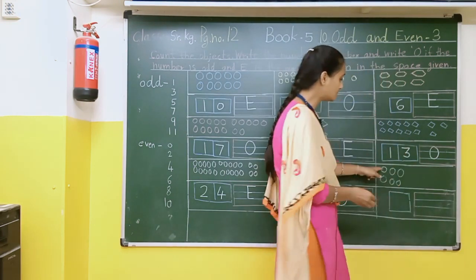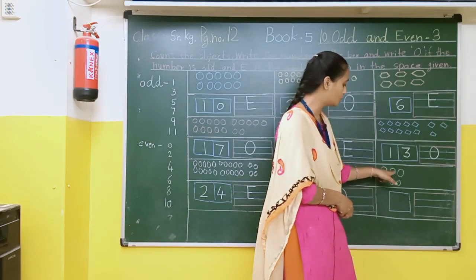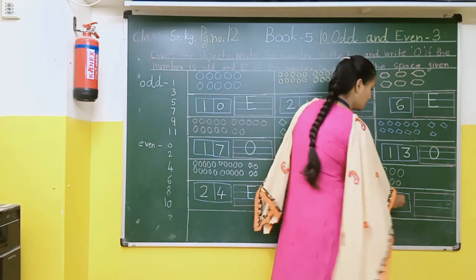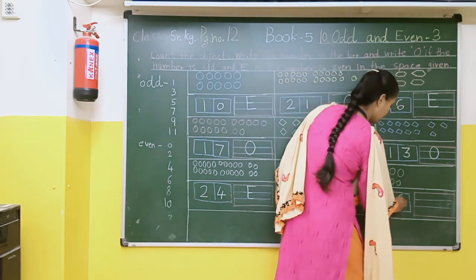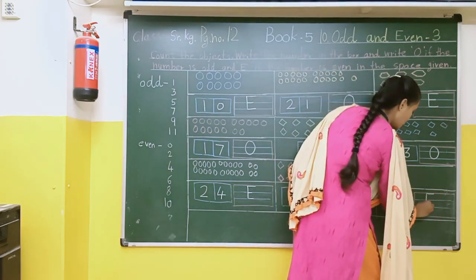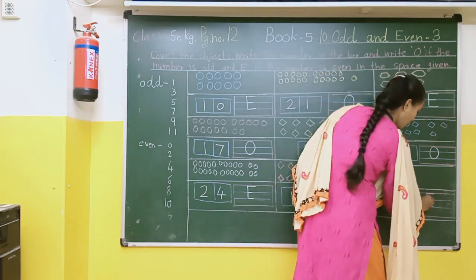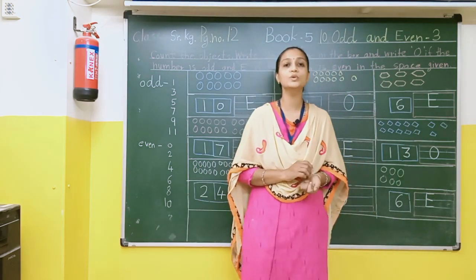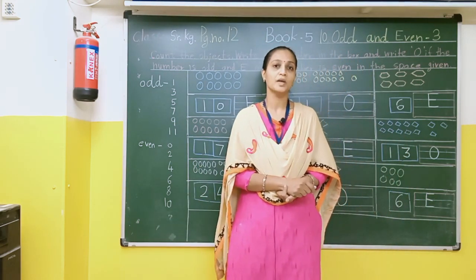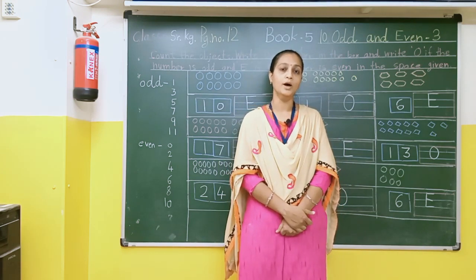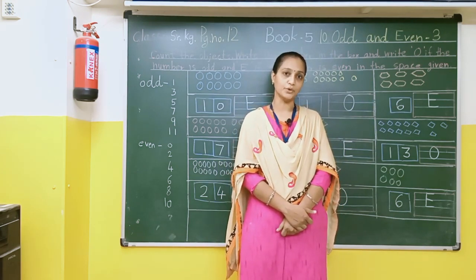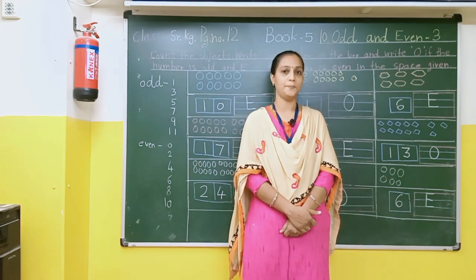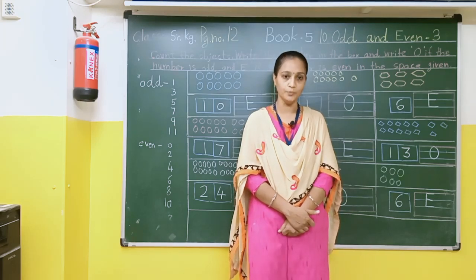So there are again 6 circles: 1, 2, 3, 4, 5, 6. So here we will write 6. And 6 is even — E for even. In this way students, you can complete this activity. After that, tell your mama to take a photo and send it to me. Thank you students and parents. Stay safe at home.